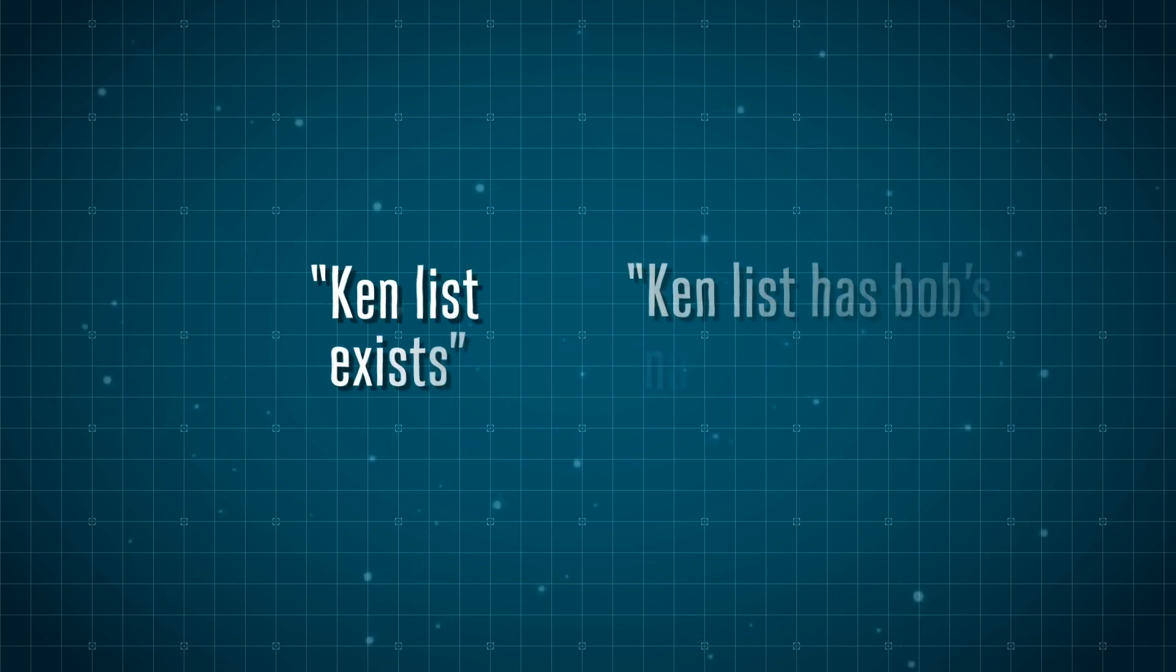So how is this useful? Well, type theory and programming. Intuitionistic logic is a restricted classical logic that takes anything in our proposition and we have to prove that it exists. For example, Ken's list.